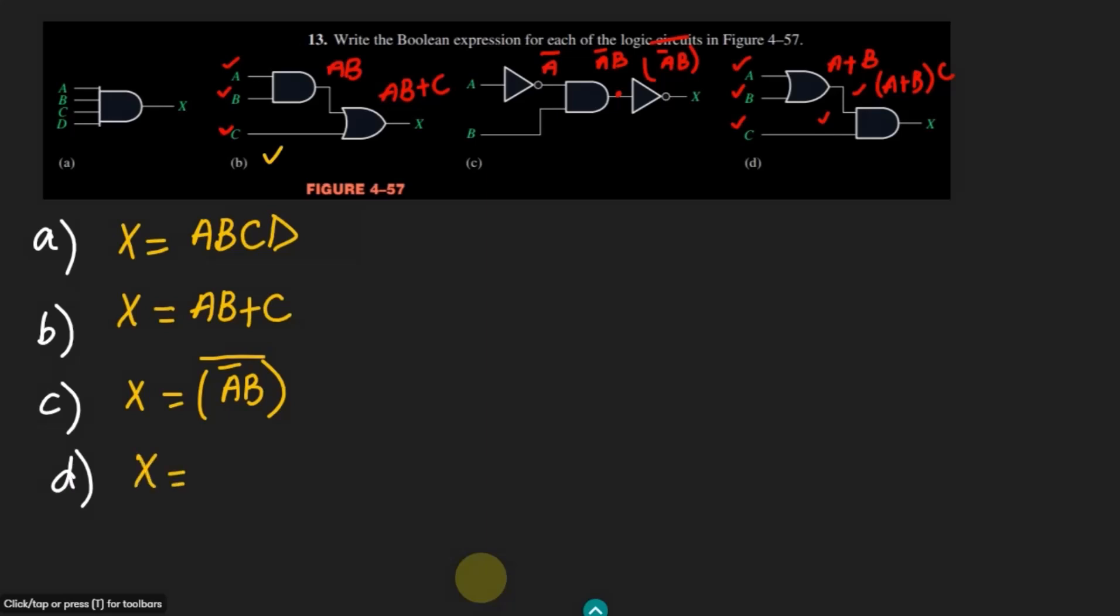That would be the output of my combination here which is shown. Therefore the value of x will be A plus B, C whole multiplied with this C.